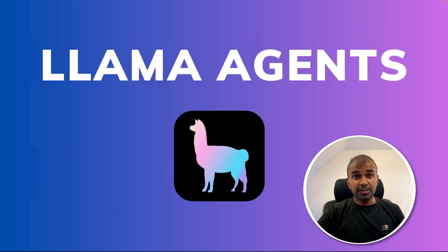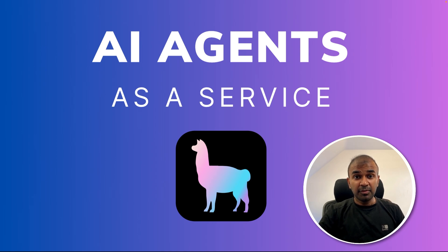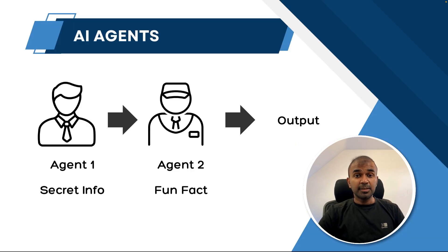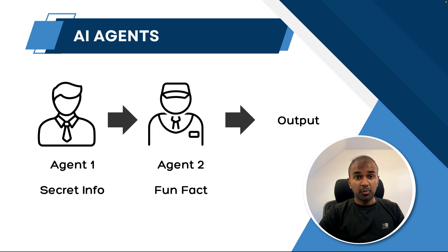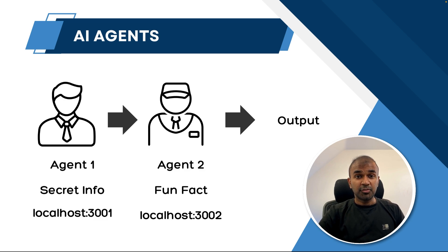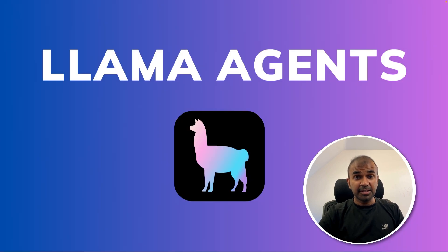So what is different about Llama Agents? It's AI Agents as a Service, which means each individual agent will act as a service and run on a separate URL. Imagine you have two agents — agent one has access to secret information, agent two can create fun facts. But in the current scenario, all these agents exist for a second and disappear. What if you want to persist these agents, host them on a server and access them whenever required? That's when we convert these agents as services, and this Llama Agents framework makes things easier for you.